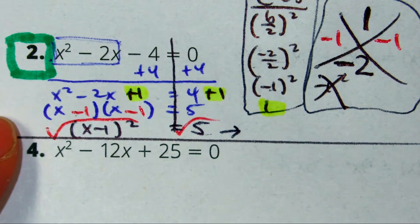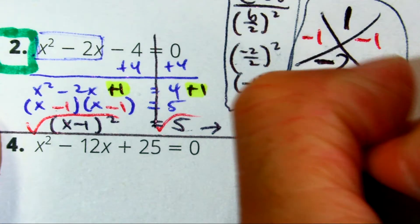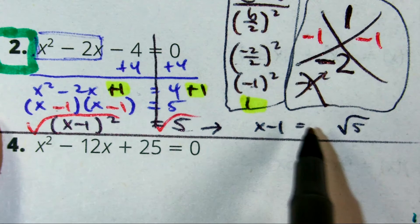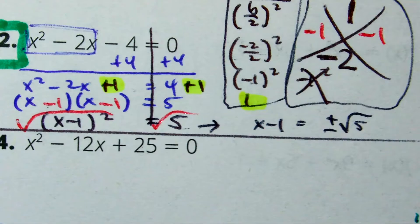x minus 1 is equal to... And the radical 5 should have what in front of it? There you go. Almost done.